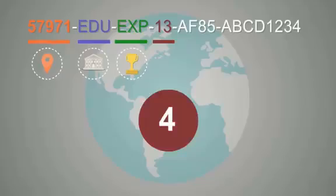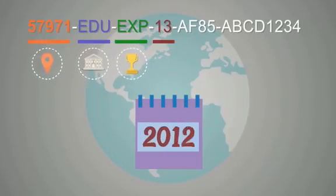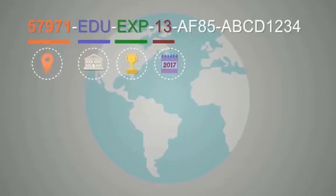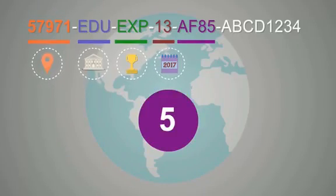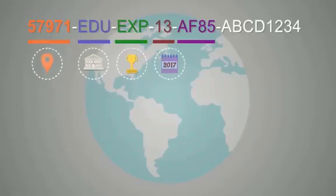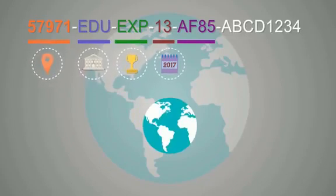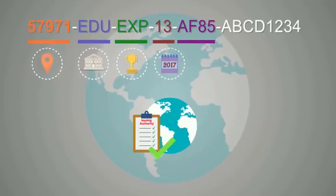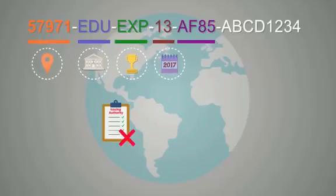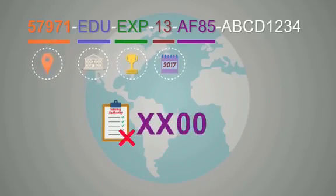Part 4 consists of 2 digits representing the certificate issuing year. Part 5 consists of 4 fields — 2 digits and 2 letters — representing the international unified number of the issuing authority, also known as the establishment international ID in the system database. Institutions not listed in the database will have the default symbol XX00.